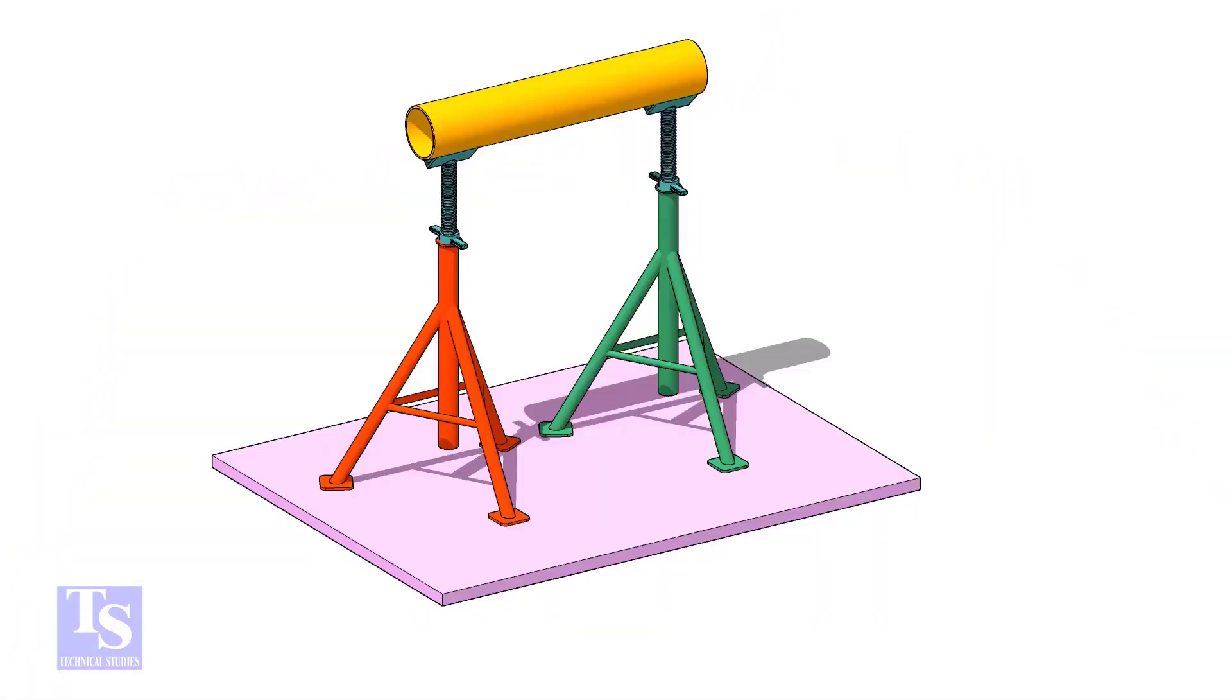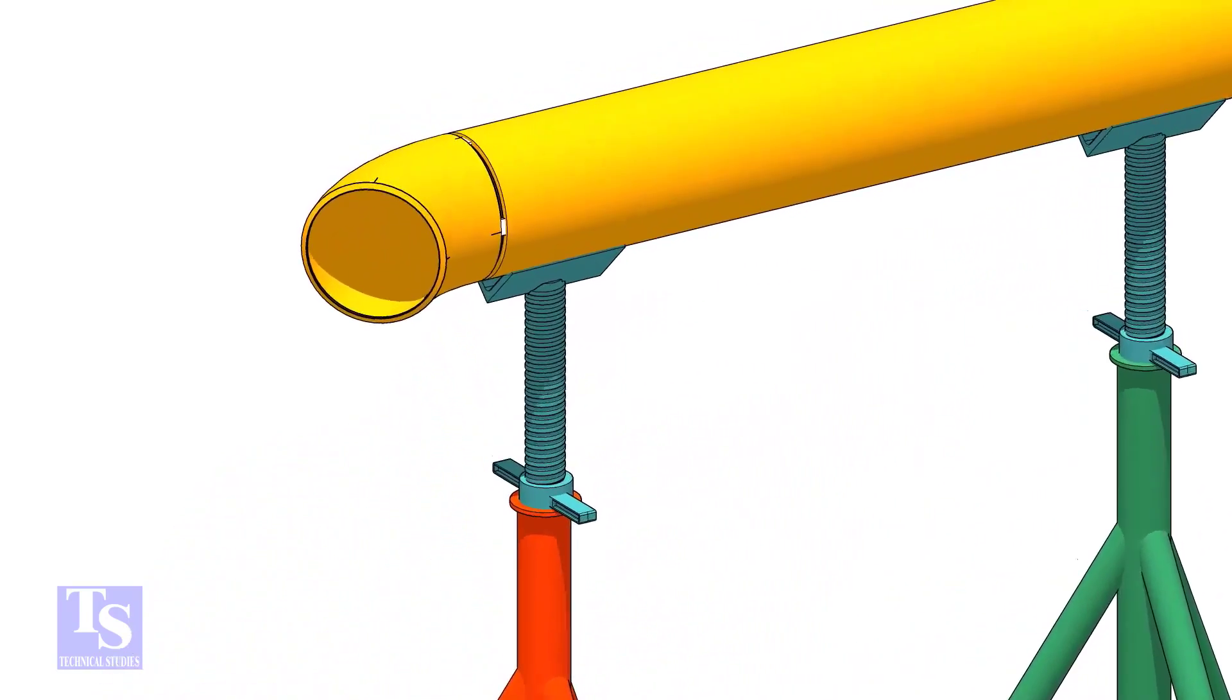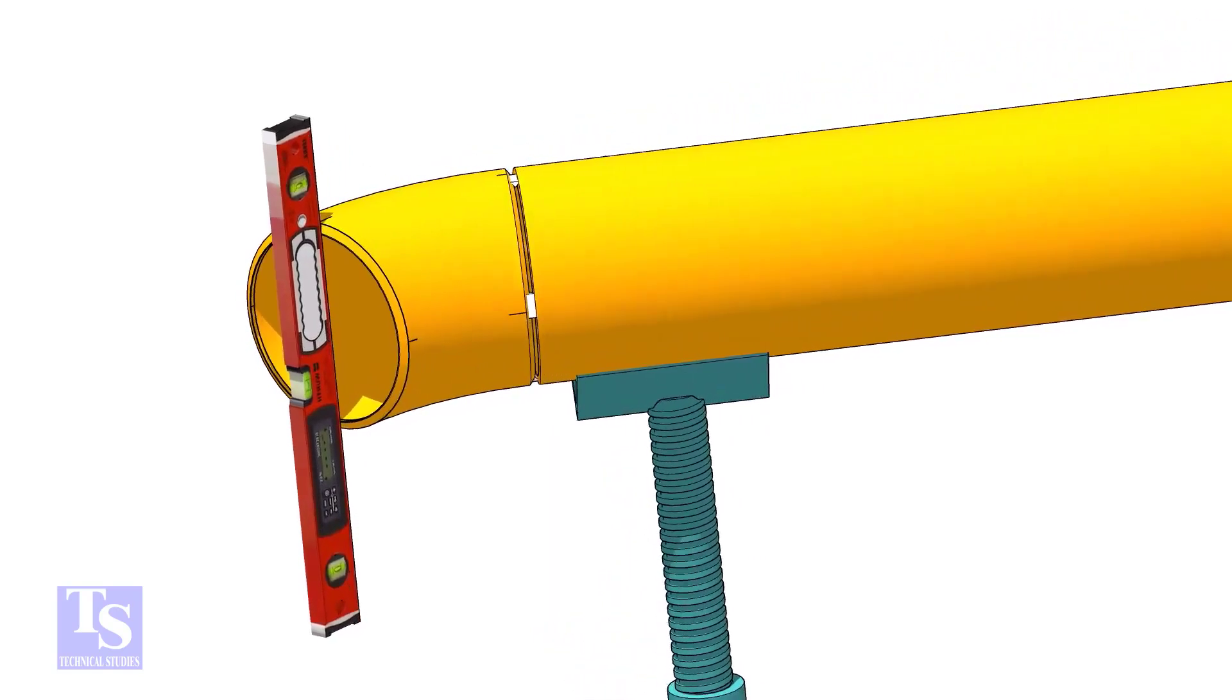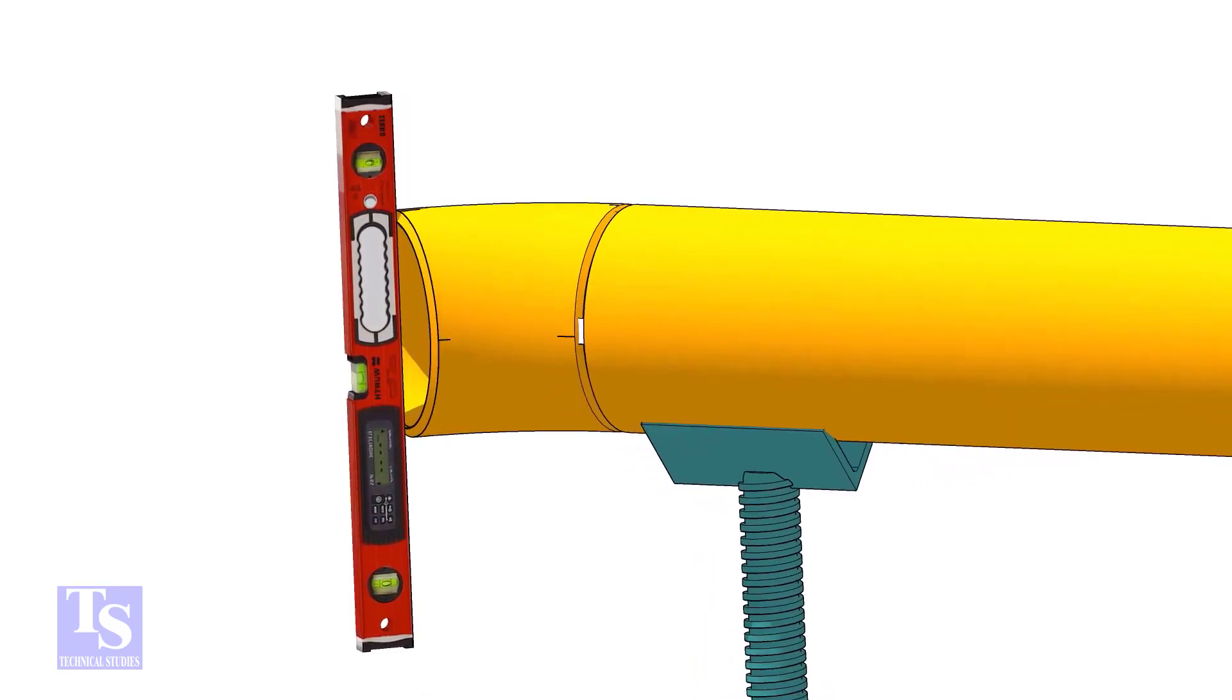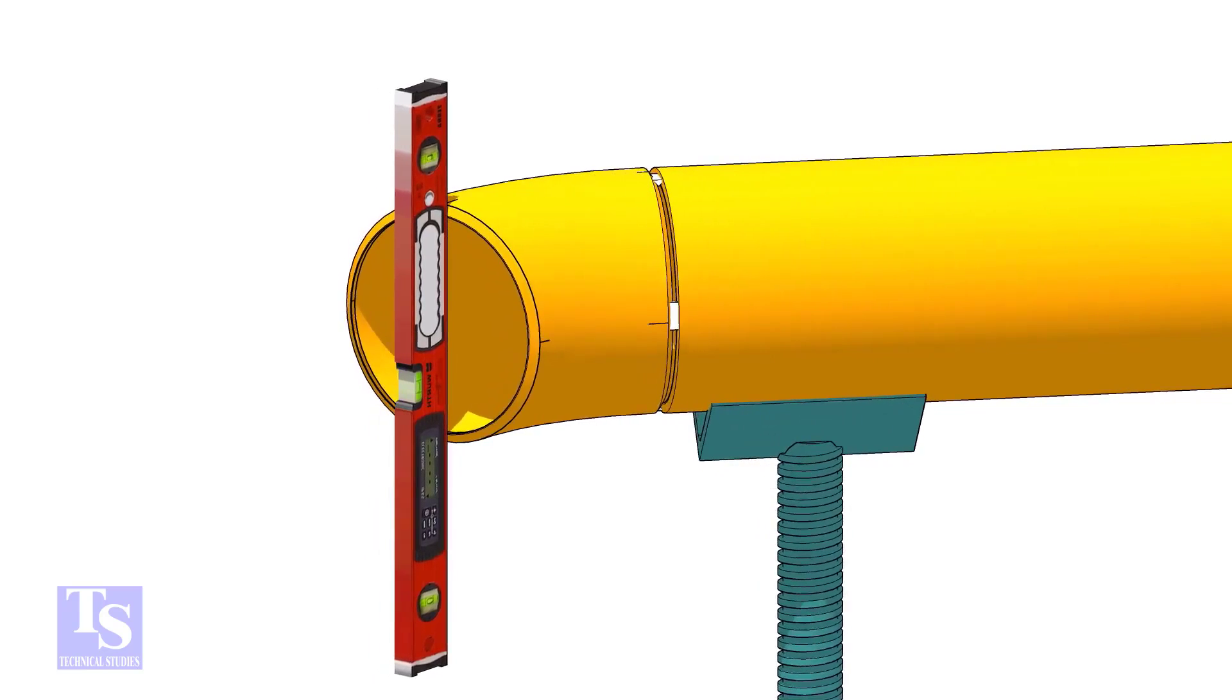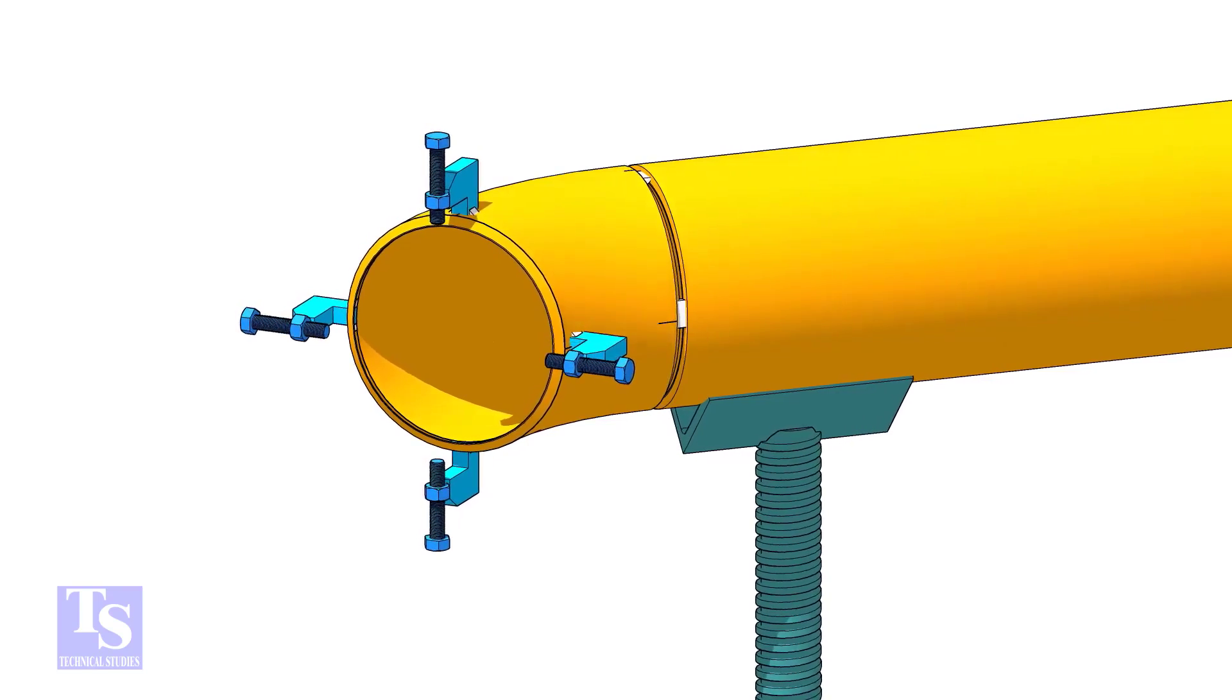Tack weld one elbow on a piece of the same size pipe. Level the elbow face through the center marks. Tack weld four jack bolts as shown.